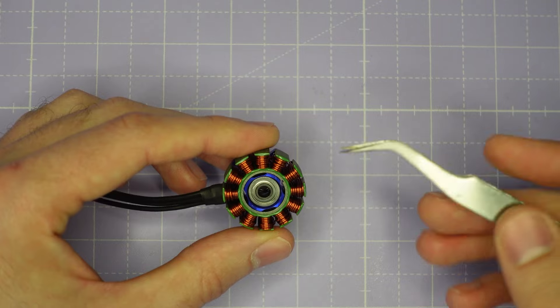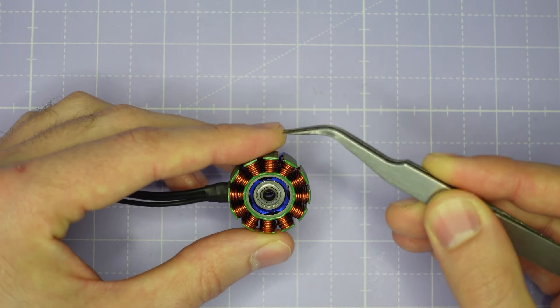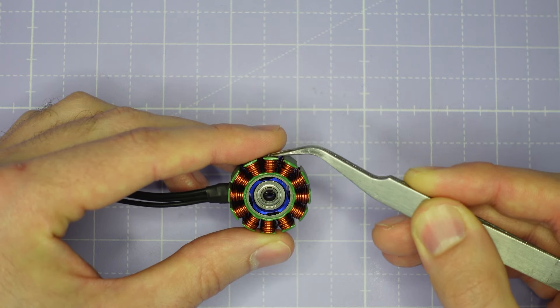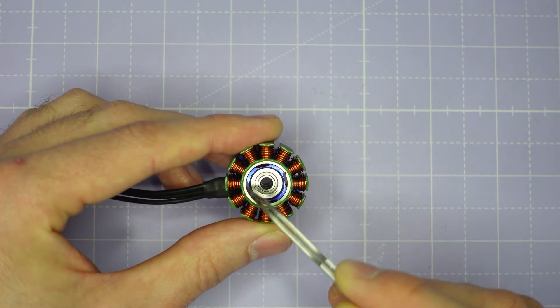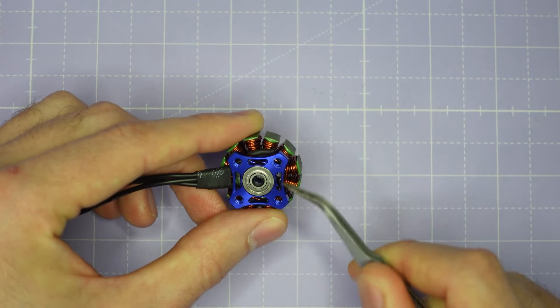Looking now at the stator design, you can see these really neat windings that RC and Power are famous for, and of course, they're using their military-grade 260 degrees centigrade rated enamel, which makes this motor almost impossible to smoke.